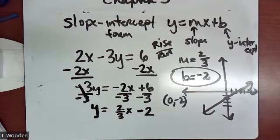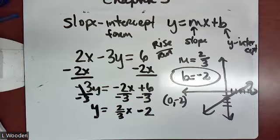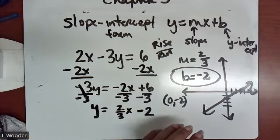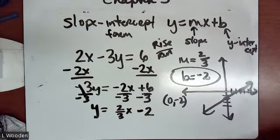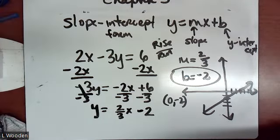A student asks about the rise and run: is it always going up and to the right? Unless you have a negative slope — then you go down and right. I always tell students: always run right, just apply the negative to the rise part. If there's a negative slope, you rise down and then you run right.